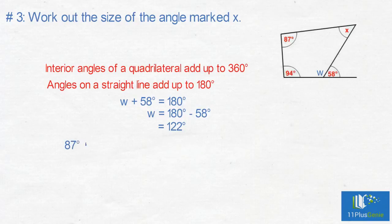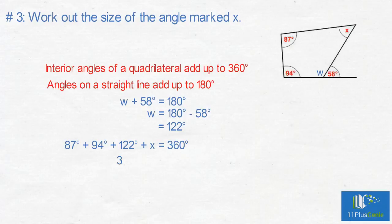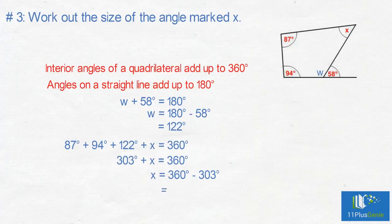87 degrees plus 94 degrees plus 122 degrees plus X equals 360 degrees. This simplifies to 303 degrees plus X equals 360 degrees. X equals 360 degrees minus 303 degrees, which equals 57 degrees.